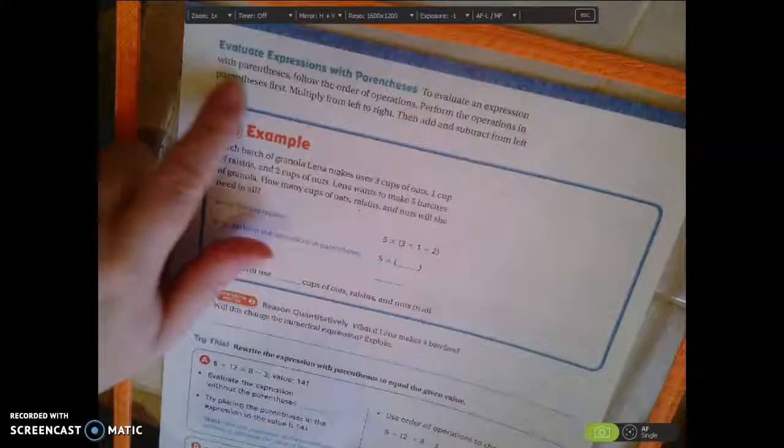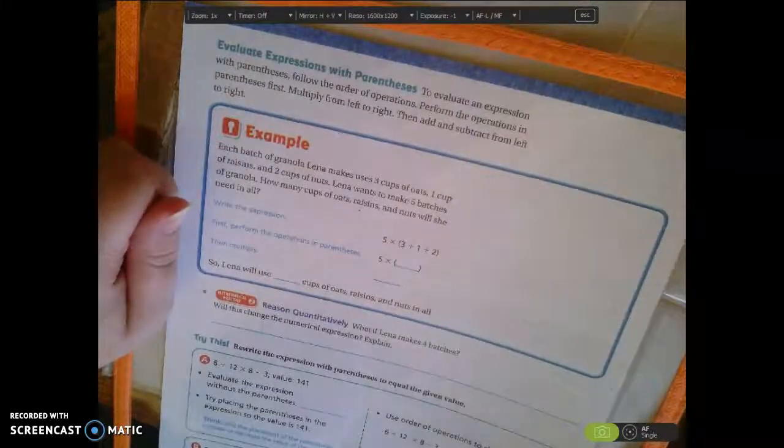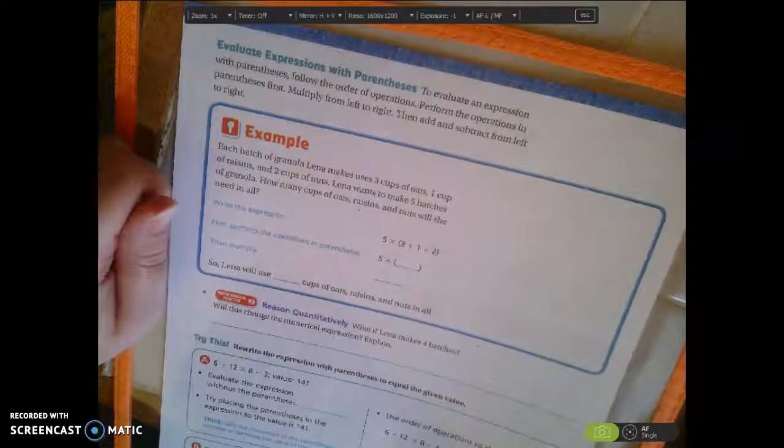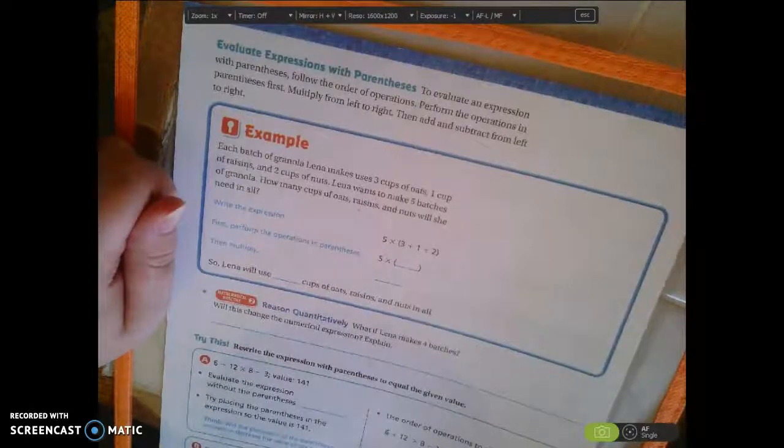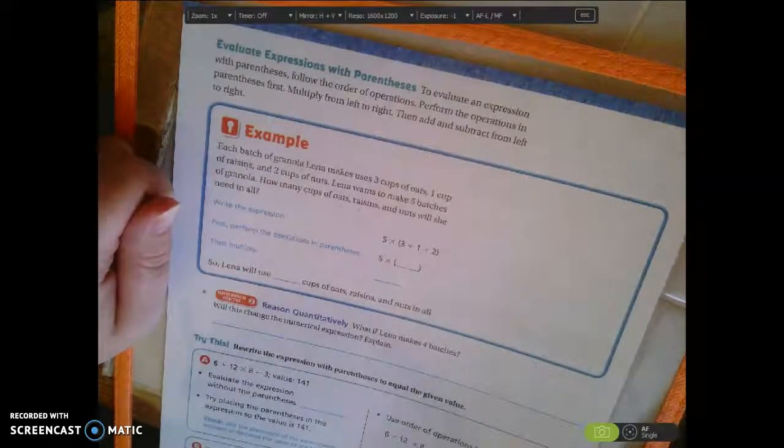Then we're going to turn the page. This is evaluate expressions with parentheses. To evaluate an expression with parentheses, follow the order of operations. Perform the operations in parentheses first, multiply from left to right, then add and subtract from left to right.